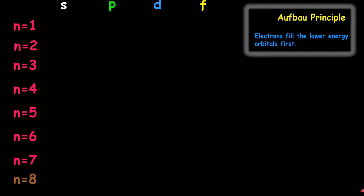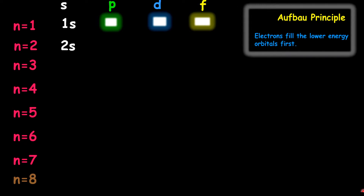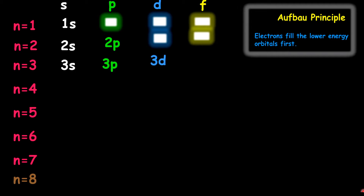In terms of filling shells and subshells with orbitals, the first shell, N equal to 1, can have only one orbital — the 1S orbital. There is no P, D, or F. Going to the second shell, we have two subshells: the 2S and 2P, so there is no D or F. Going to the third shell, there can be three subshells: 3S, 3P, and 3D. There is no F.